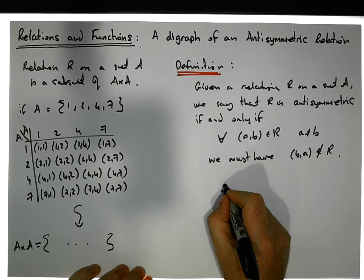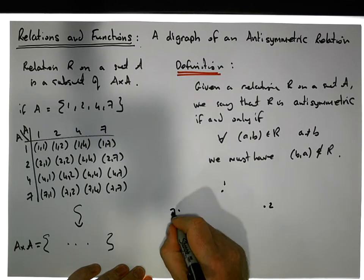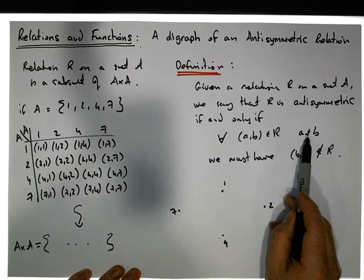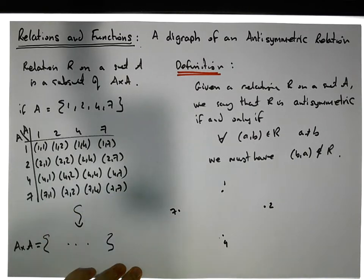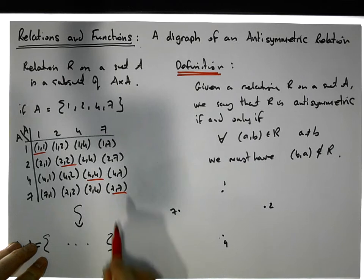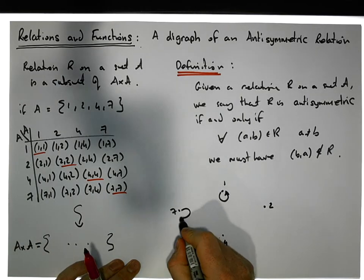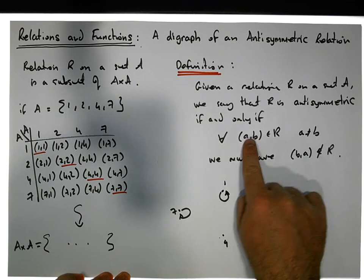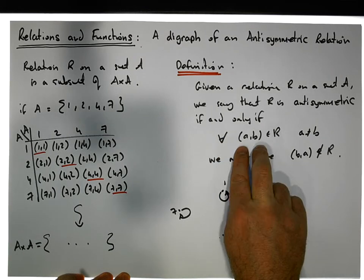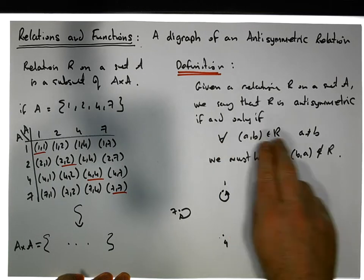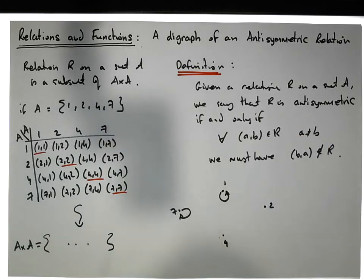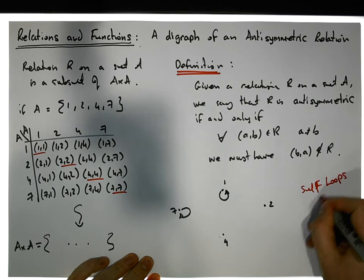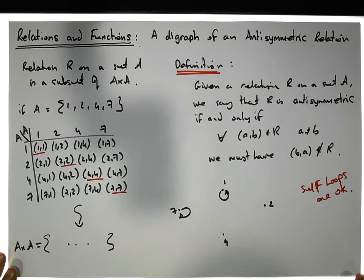So what does an anti-symmetric graph look like? Let's construct a graph with nodes 1, 2, 4, and 7. The condition only applies when a is not equal to b, so we don't need to worry about the self-loops. Self-loops are okay in an anti-symmetric relation — the anti-symmetric condition doesn't require us to consider them. We only consider ordered pairs where a is not equal to b.